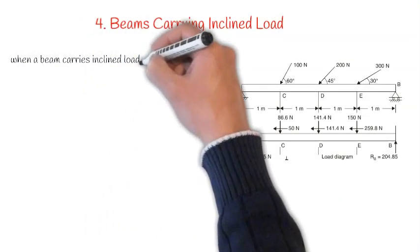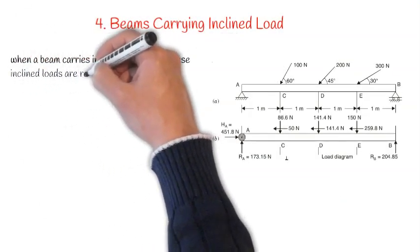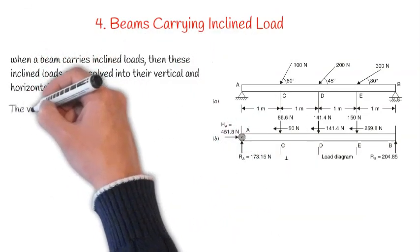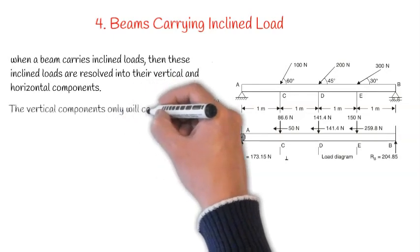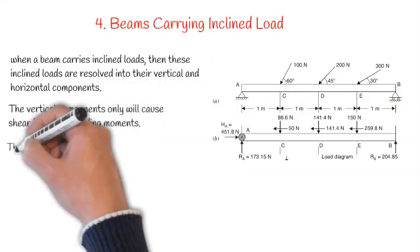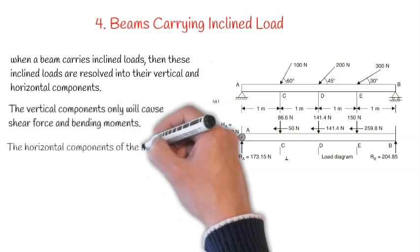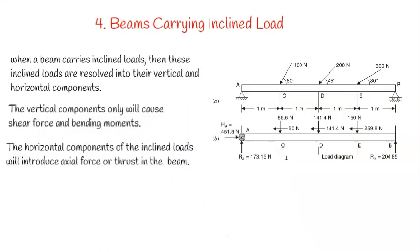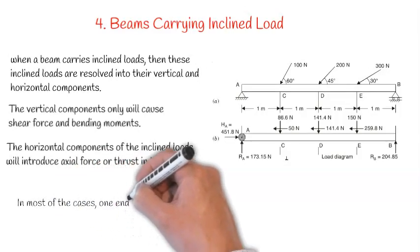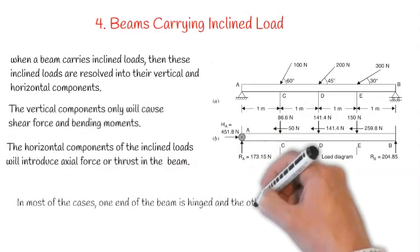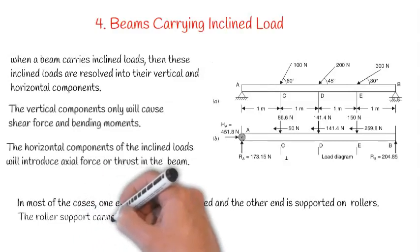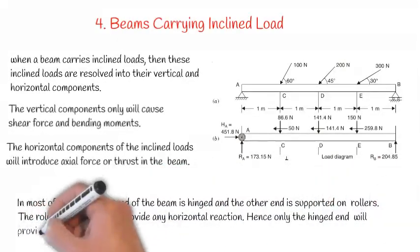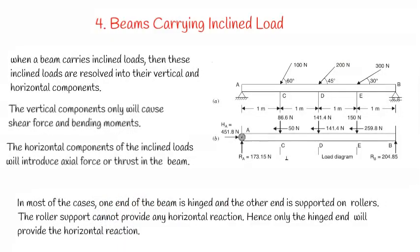4. Beams Carrying Inclined Load: When a beam carries inclined loads, these inclined loads are resolved into their vertical and horizontal components. The vertical component only will cause shear force and bending moments. The horizontal component of the inclined load will introduce axial force or thrust in the beam. In most cases, one end of the beam is hinged and the other end is supported on rollers. The roller support cannot provide any horizontal reaction, hence only the hinged end will provide the horizontal reaction.